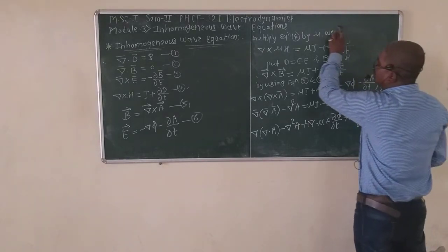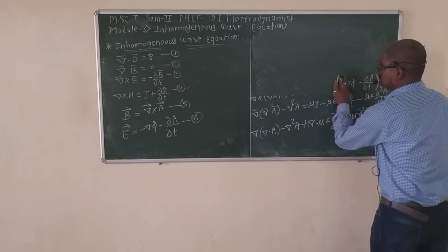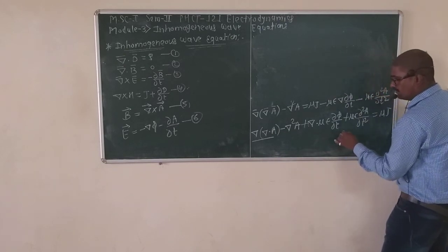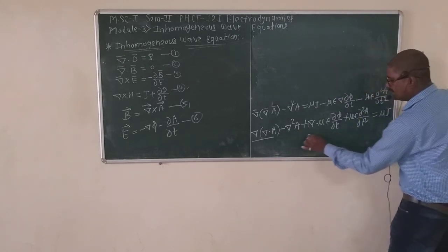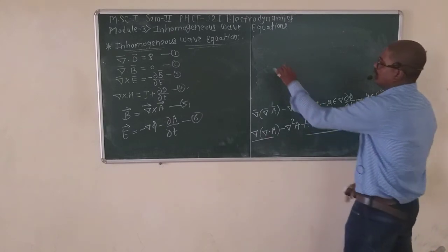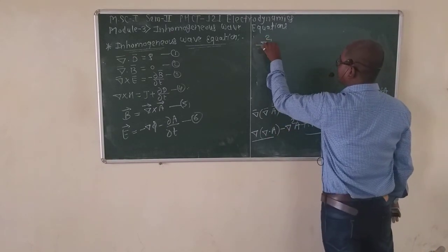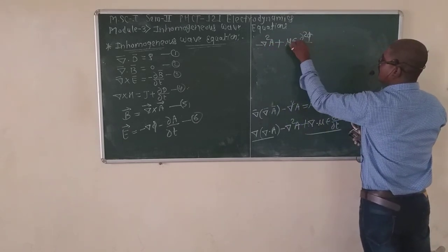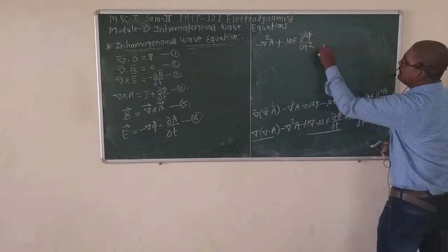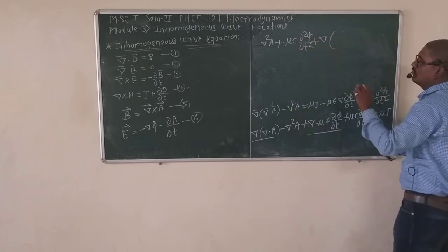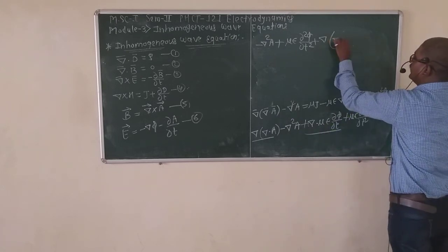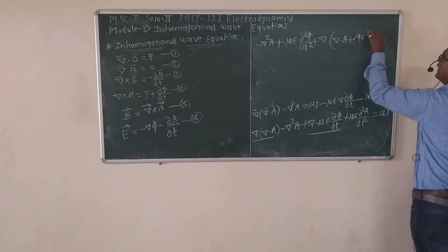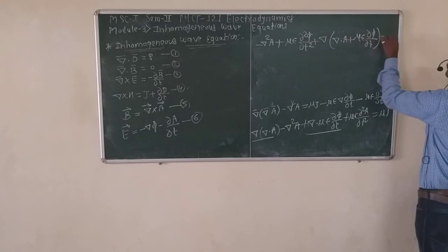Rearranging terms: del(del dot A) minus del squared A plus mu*epsilon*(d²A/dt²) equals mu*J minus mu*epsilon*del*(d phi/dt). Separating del-squared A and grouping the del terms, we get del(del dot A plus mu*epsilon*(d phi/dt)) minus del squared A plus mu*epsilon*(d²A/dt²) equals mu*J.